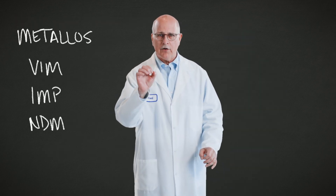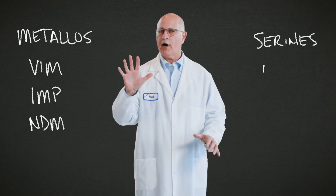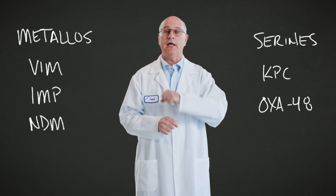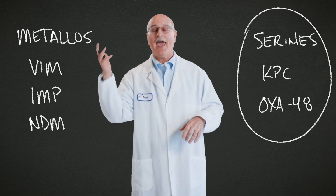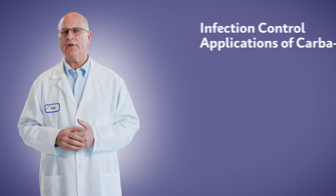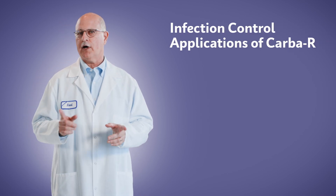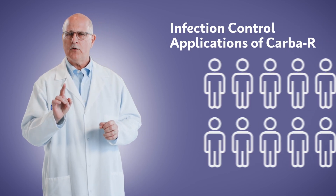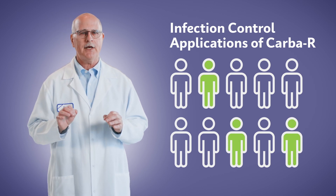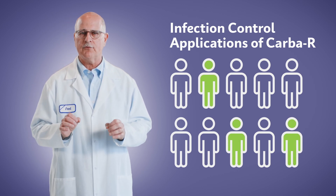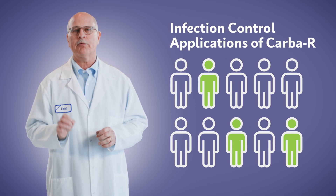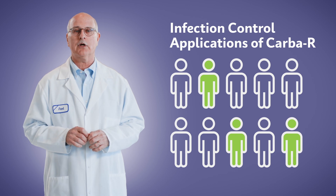That's where expert CARB-R comes in. It calls out all five families of carbapenemases separately, so it does differentiate between the serines and the metalloses. But let's start with infection control applications of CARB-R. Knowing which patients in a hospital are colonized with carbapenemase-producing organisms is very important for preventing transmission and outbreaks of disease caused by these organisms.